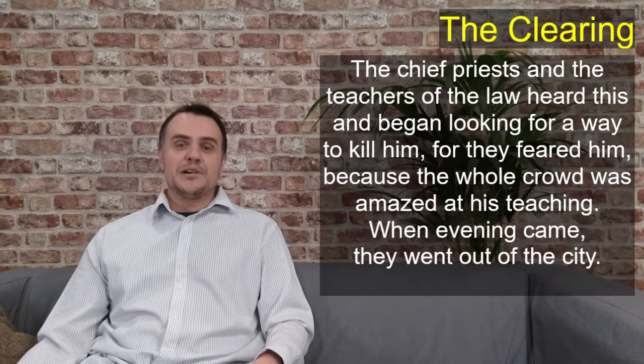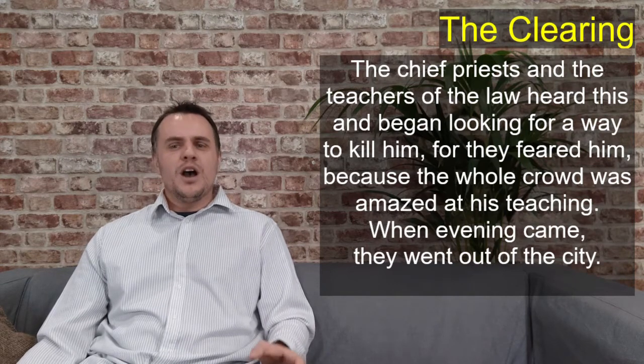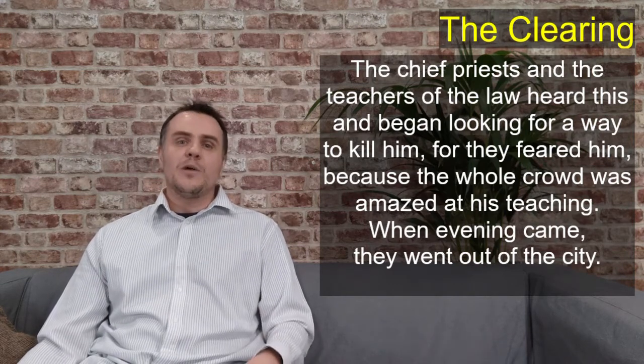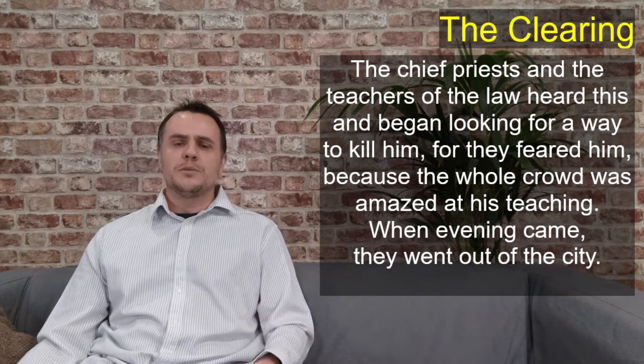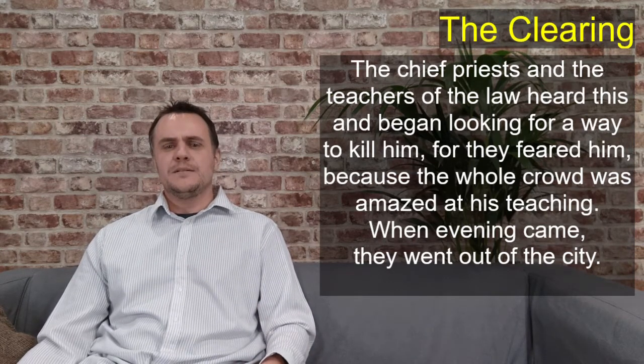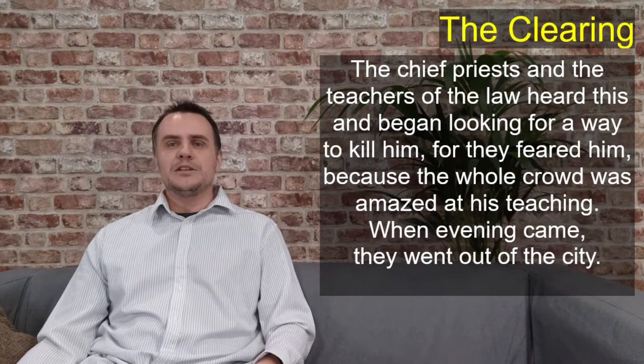And God spoke through Isaiah, expressing his desire explicitly there that all nations might come to him at his house. But instead, the temple industry just viewed the nations as a means to get rich quick. They weren't there to serve them; they were just there to make money out of them. And Jesus calls it a den of robbers. Read with me from verse 18: The chief priests and the teachers of the law heard this and began looking for a way to kill him, for they feared him because the whole crowd was amazed at his teaching. When evening came, they went out of the city.